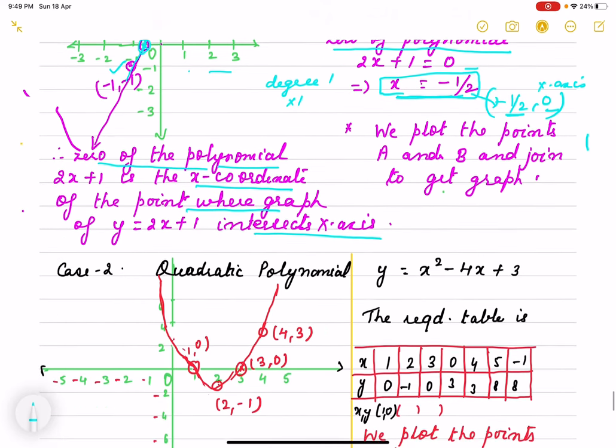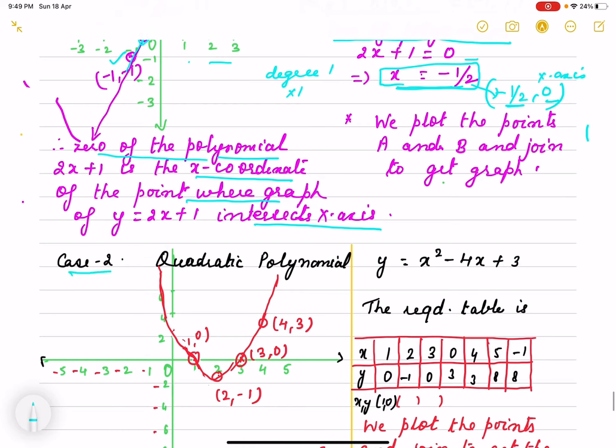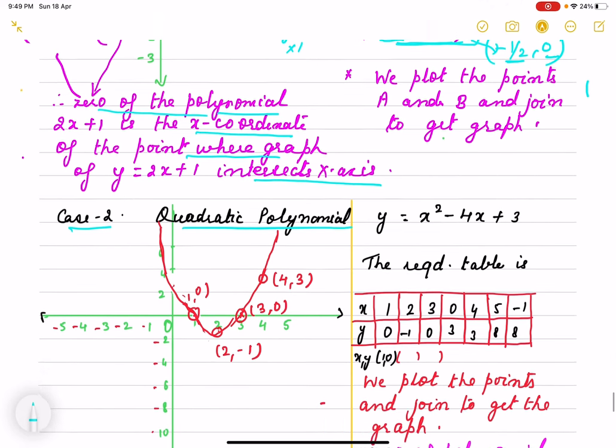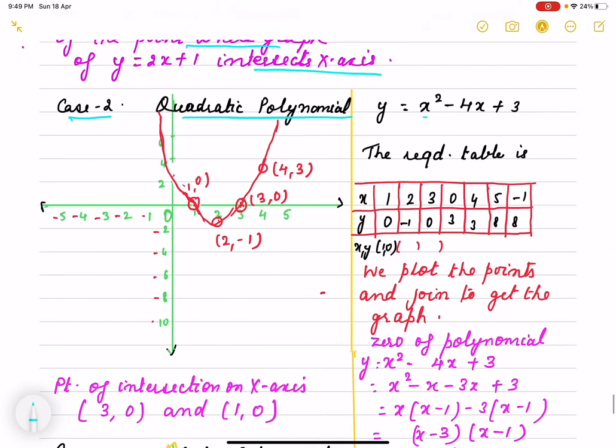Next, second case we are taking of quadratic polynomial. Here I have taken y is x-square minus 4x plus 3. So both ways we will do. We draw the graph and verify zero of the polynomial also. First we are drawing graph.